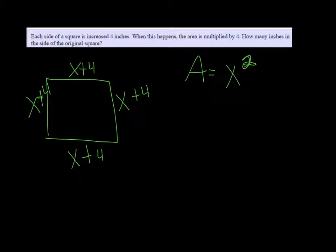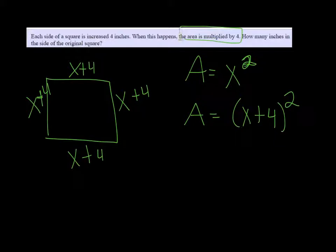And the original area was X squared. And the new area is going to be X plus 4 squared. But it says that when we increase each one by four, the area got multiplied by four.